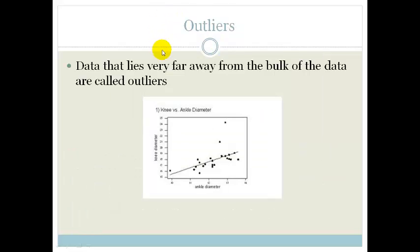Outliers. Data that lies very far away from the bulk of the data are called outliers. So, if we have that this is our best fit line, we can see that point and maybe that point as well. These are outliers. They fall very far away from the bulk of our data.